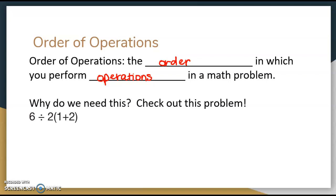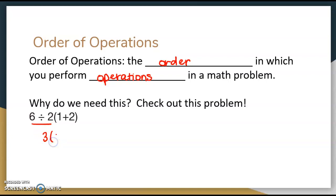Why do we need this? If I was looking at this problem right here — 6 divided by 2 times 1 plus 2 — say I was trying to do it left to right. We read left to right, so let's do the math problem left to right. That would start with 6 divided by 2, which is 3, times 1 plus 2. So 3 times 1 is 3, plus 2, so that's 5.